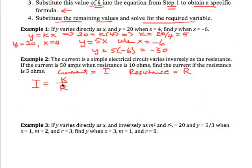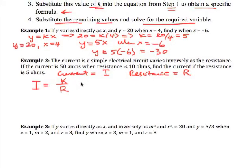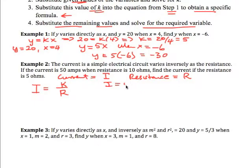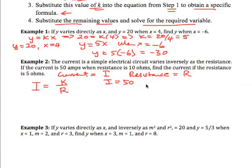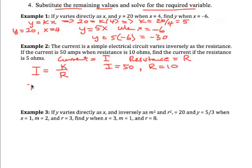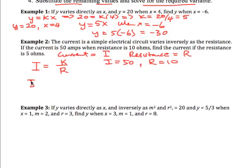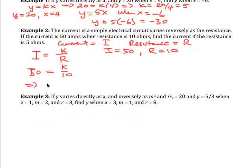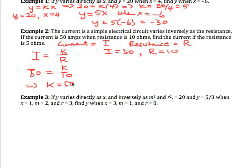So that's our equation. Now it says if the current is 50 amps when the resistance is 10, then what do we have? We have I, which is 50, equals k over 10, which implies that k is equal to 500.